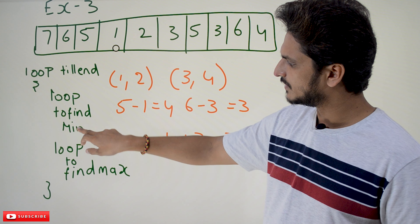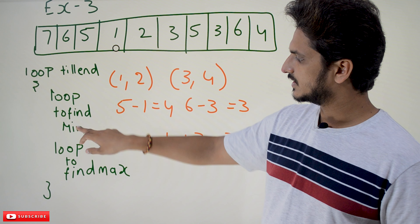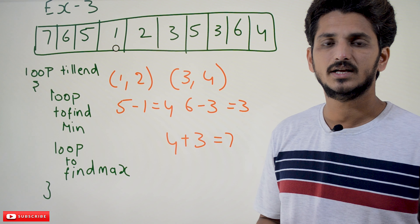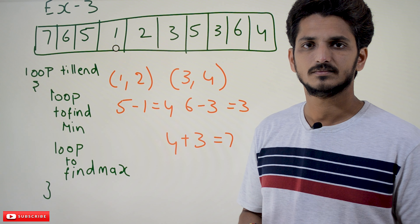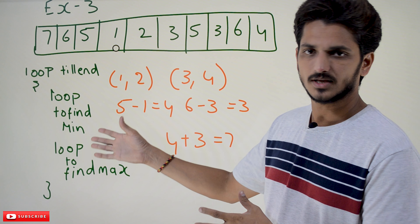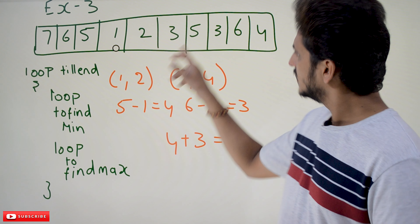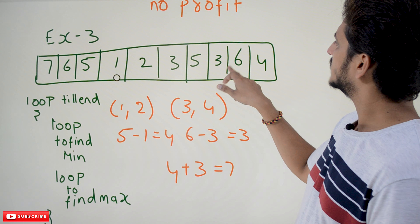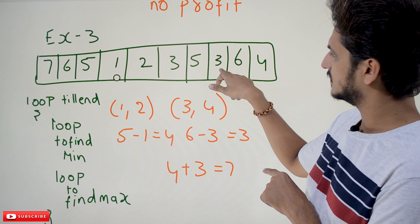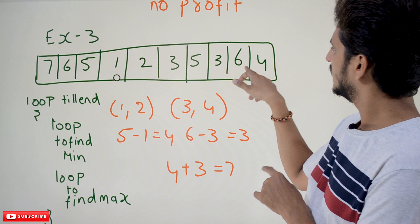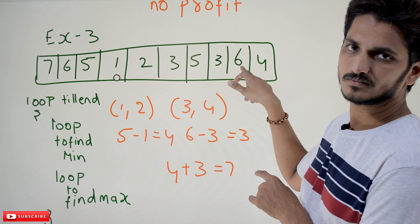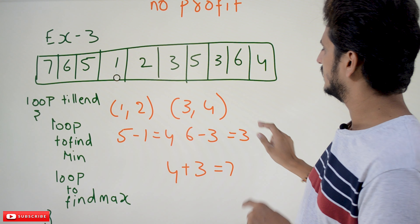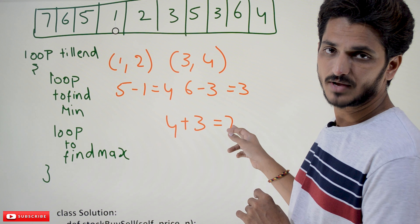The algorithm logic is: use a loop to find the minimum value, then use a loop to find the maximum value — that identifies one segment. Repeat this process until the end of the list to find the next segment. Loop till the end: find the minimum, find the maximum, find the minimum, find the maximum — that's what you need to identify.